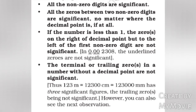Rule 3: If the number is less than 1, the zero or zeros on the right of the decimal point but to the left of the first non-zero digit are not significant. In 0.002308, the underlined zeros are not significant.